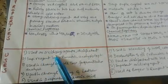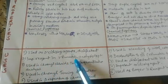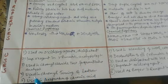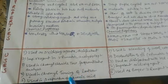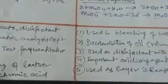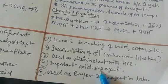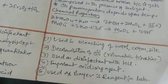Uses of potassium dichromate: it is used as an oxidizing agent and disinfectant; as an important reagent in volumetric analysis; in the chromyl chloride test for qualitative analysis; in chrome tanning of leather; and in the preparation of chromic acid. Uses of potassium permanganate: it is used in bleaching of wool, silk, and cotton; in decolorization of oils; in volumetric titration; and as a disinfectant with HCl. It is also an important oxidizing agent and used as a reagent in labs.